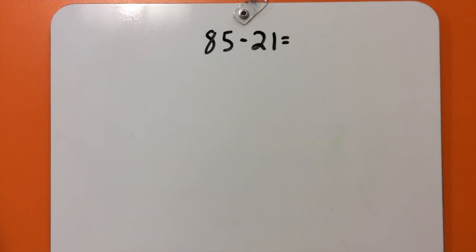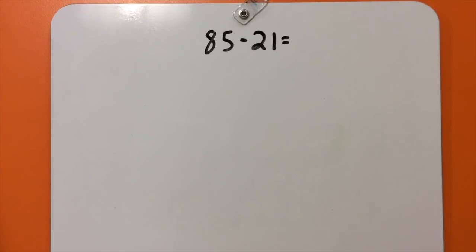I'm going to show you a few different ways to do this problem. The first way that we are going to use is using place value cubes. So to make 85, I need 8 tens.